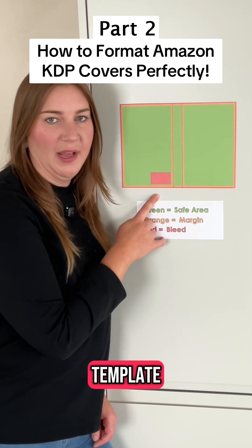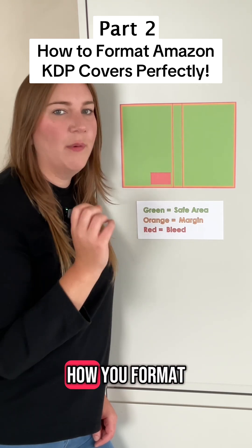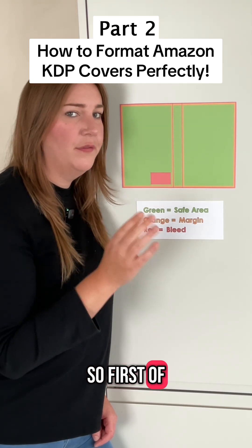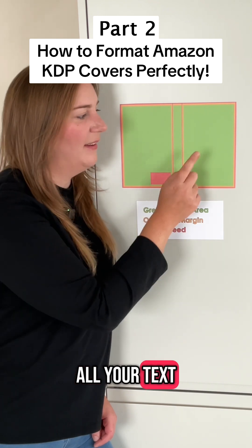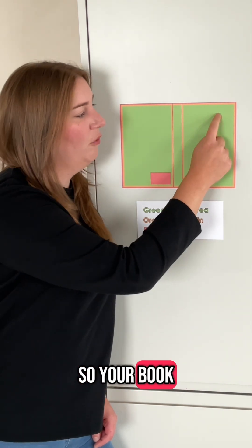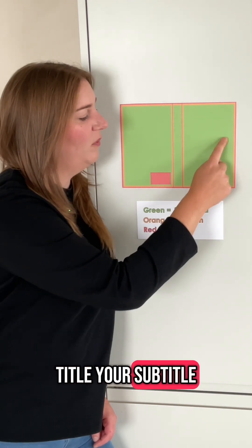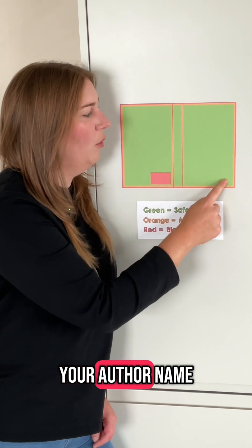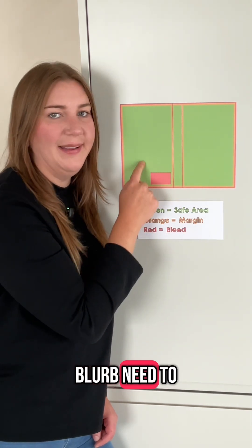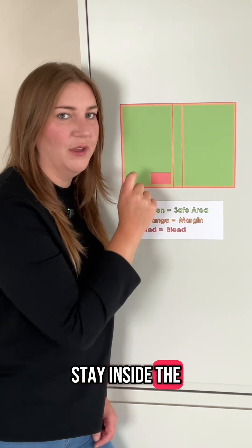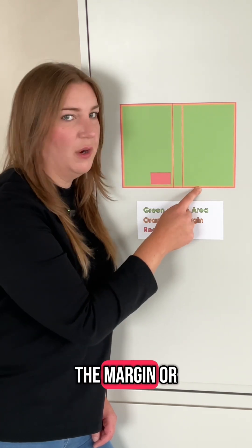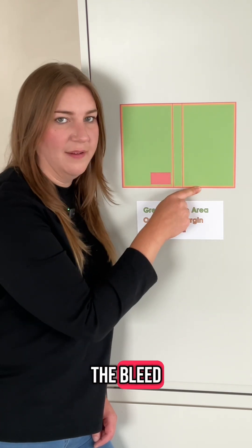So now you've made your template, let's talk about how you format your covers. First of all, all your text needs to stay inside the safe area. So your book title, your subtitle, your author name, your spine title, and your book blurb need to stay inside the green area. No text can go inside the margin or the bleed.